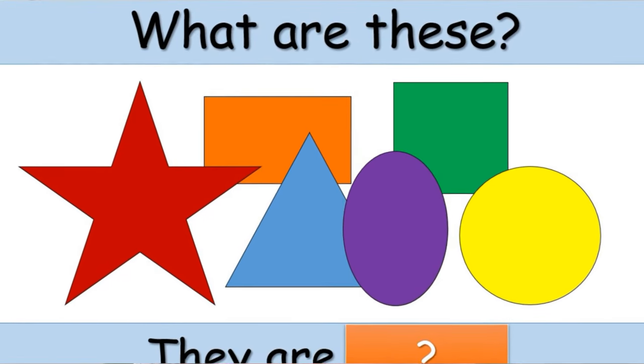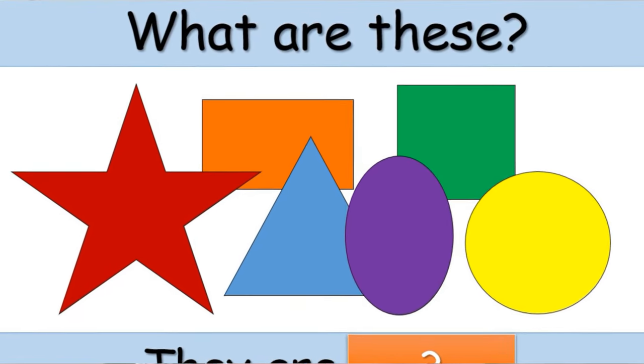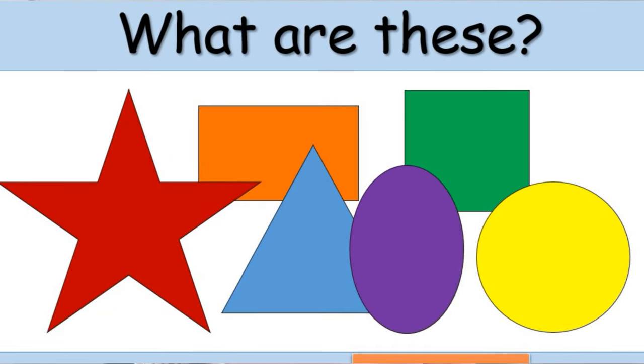In this ready-to-go ESL lesson, students learn to say, pronounce, and identify 6 shapes: star, oval, circle, triangle, rectangle, and square. They also learn to recognize these shapes in animals and practice simple dialogue with a fun and exciting game.